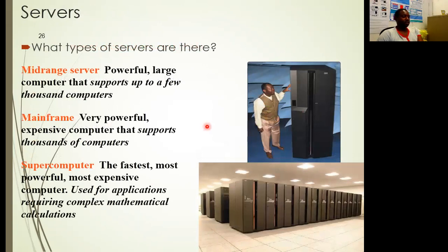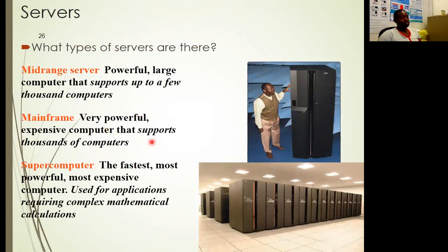Then we also look at servers. Mid-range servers are large and can support up to a few thousand computers. The mainframe is very powerful and expensive, and can support thousands of computers — you'll find very few mainframe computers in a country because they can support a lot of users. Then there's the supercomputer, which is the fastest, most powerful, and most expensive. These are used in complicated mathematical calculations and some are used as game servers because they are very fast, though also very expensive.